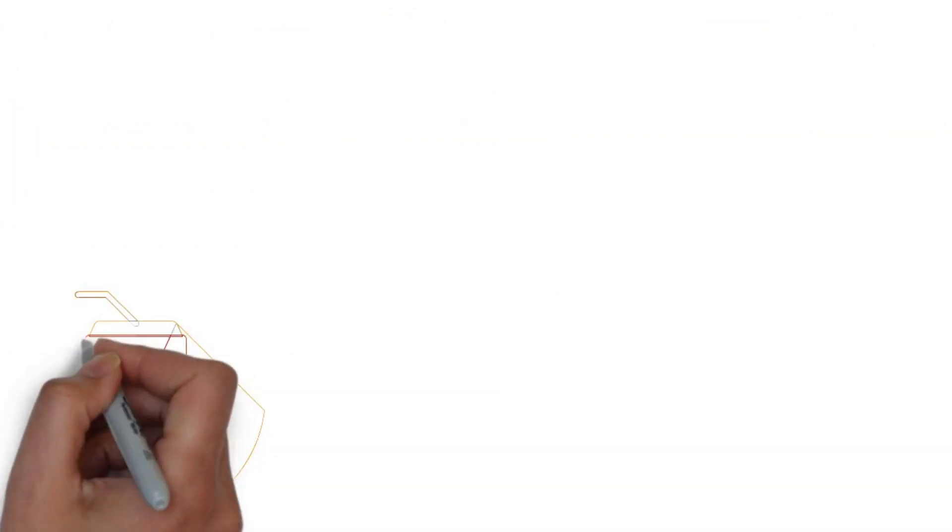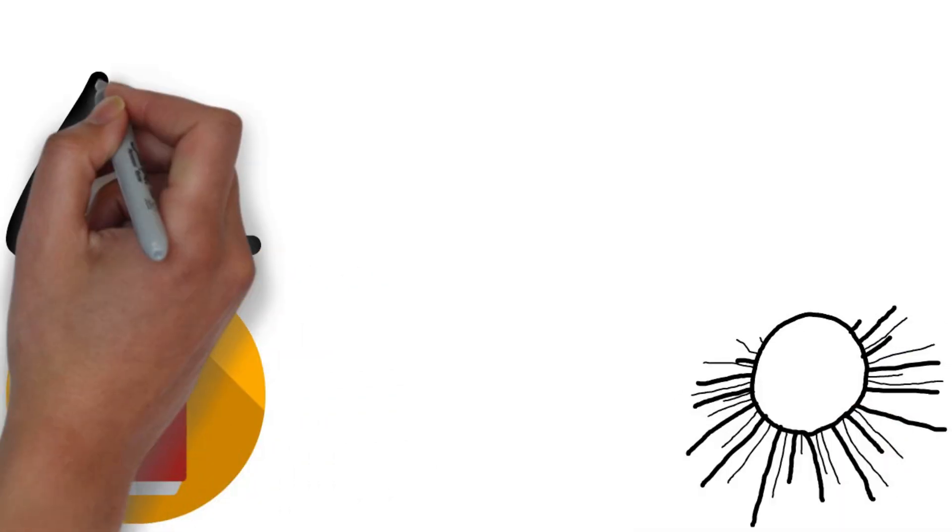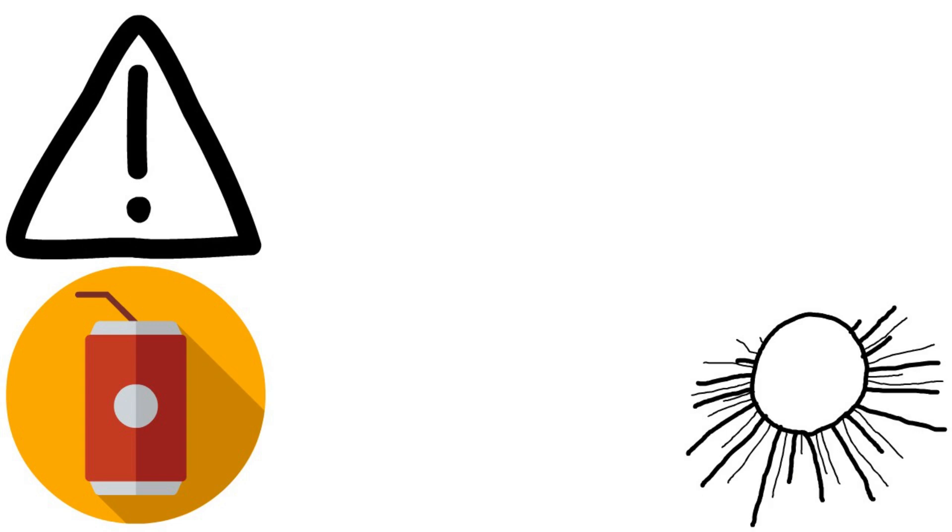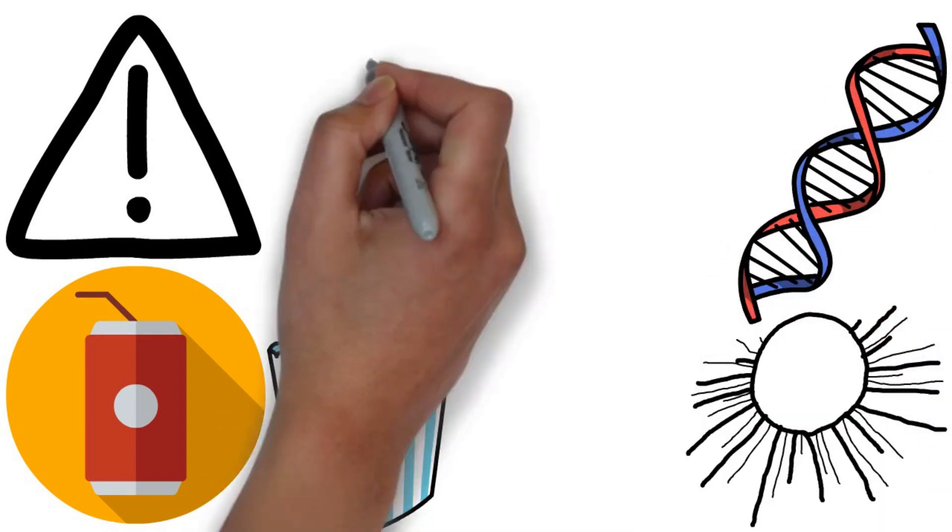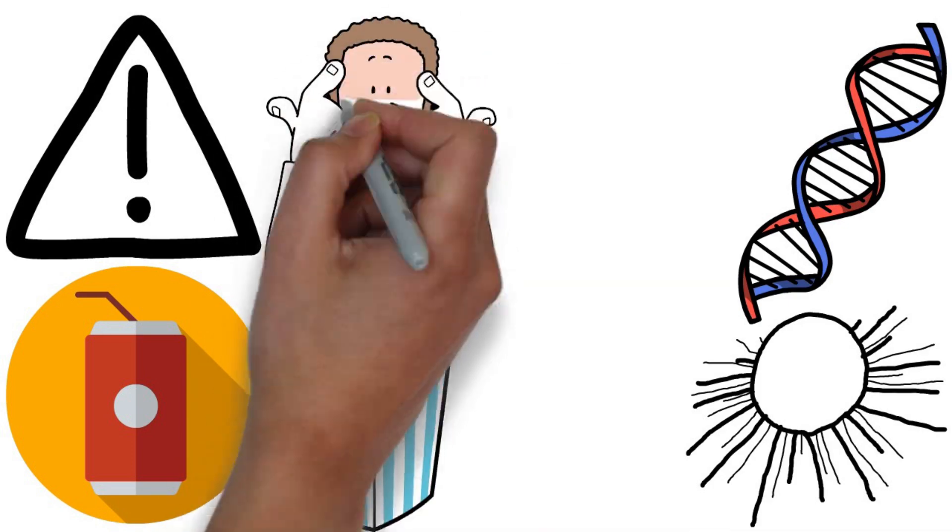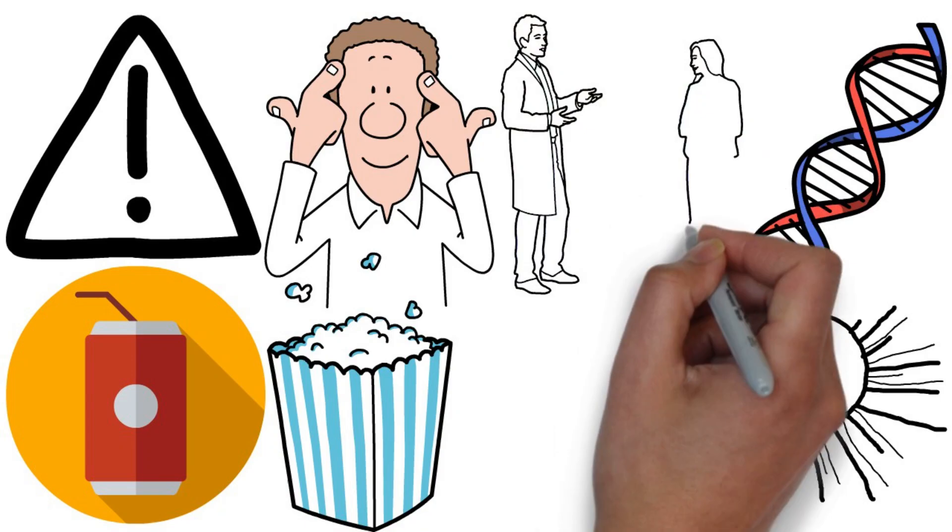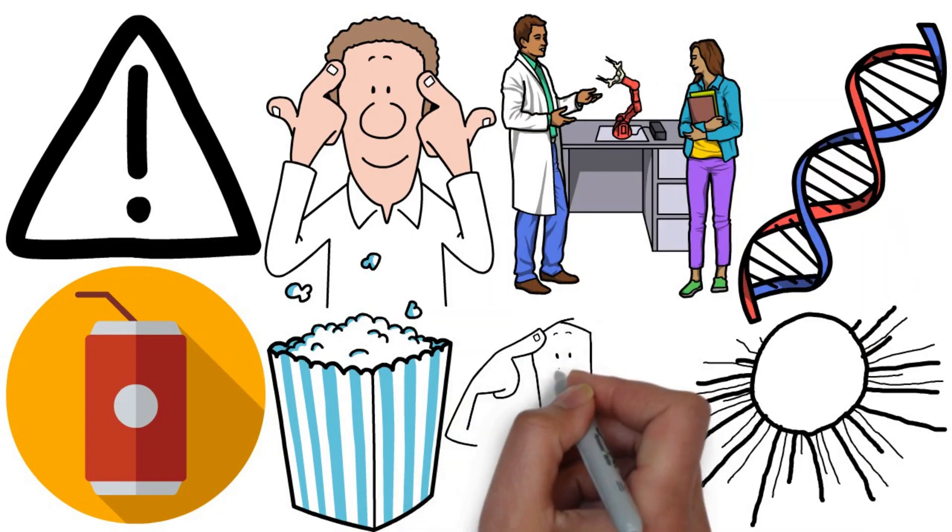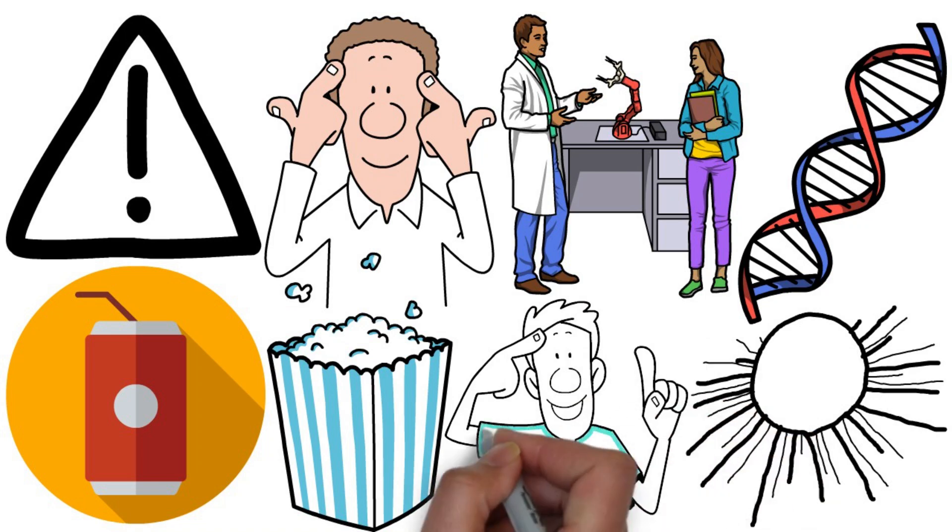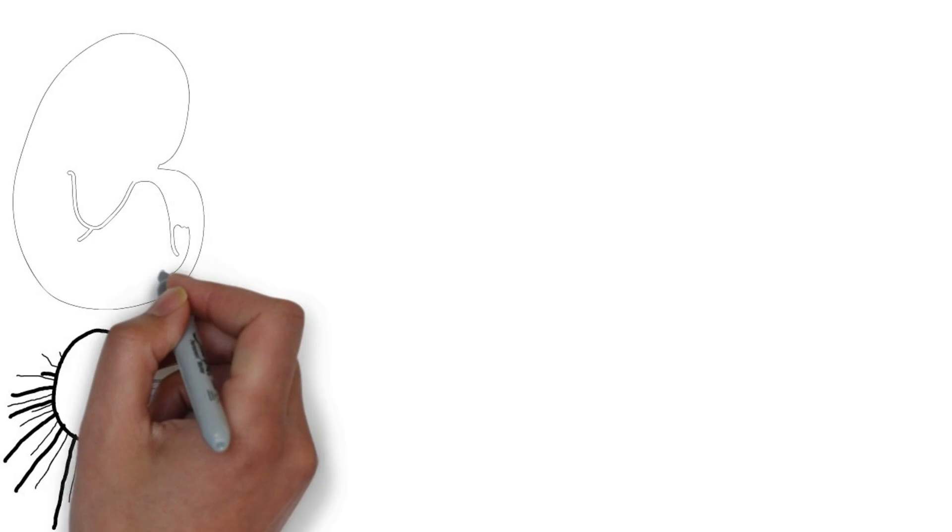For instance, aspartame has been linked to skin cancers and is particularly dangerous for people with phenylketonuria, a rare genetic disorder. Saccharin, once considered a breakthrough for calorie-free sweetness, has been shown to cause bladder cancer in lab animals. Acesulfame-K is another one to watch out for. It has been linked to tumors and may pose risks during pregnancy.